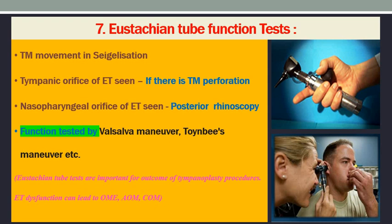The next important test is the Eustachian tube function test. When the tympanic membrane moves on swallowing or with a pneumatic speculum, there is some Eustachian tube function. The tympanic orifice of the Eustachian tube is seen when there is TM perforation — you can check if it is blocked or patent. The nasopharyngeal orifice is seen on posterior endoscopy but is difficult in clinical practice. Eustachian tube function is tested by Valsalva manoeuvre — the patient closes nostrils and mouth and attempts to breathe out, causing bulging of the membrane — or by Toynbee's manoeuvre, which shows retraction of the tympanic membrane. Eustachian tube function is significant for the outcome of tympanoplasty, and dysfunction can lead to otitis media with effusion, AOM, or chronic otitis media.